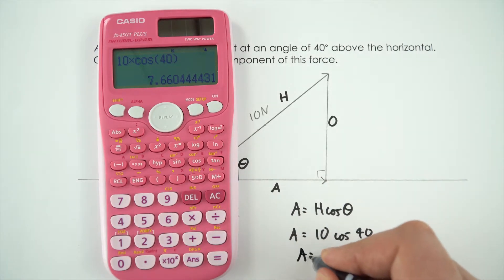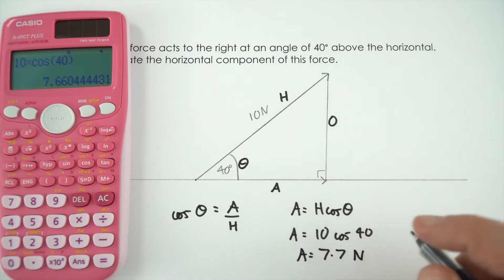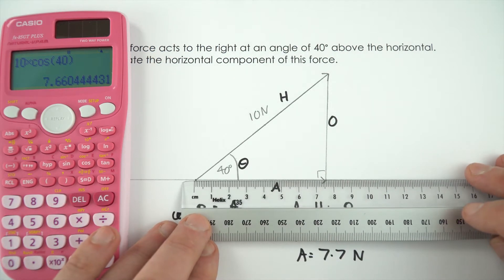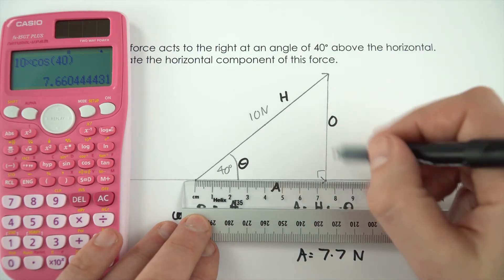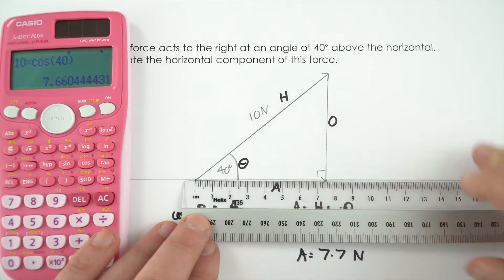So the length of this side is equal to 7.7 Newtons. And just as a final confirmation I'm going to check this is about 7.7 centimeters. It's not the most precise diagram but you can see, okay my line's not perfect, but it's about seven and a half, 7.7 centimeters.